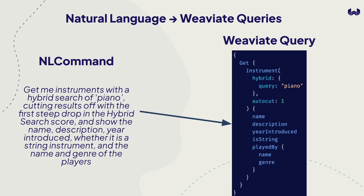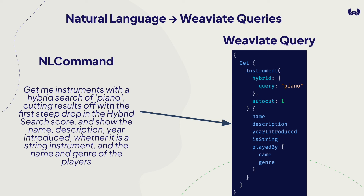Here's another example of a more complex query: 'Give me instruments with a hybrid search of piano, cutting results off with the first deep drop in the hybrid search score, and show the name, description, year introduced, whether it is a string instrument, and the name and genre of the players.' The gorilla is able to combine hybrid with autocut — which stops showing search results once they're no longer good according to the slope and vector distance — as well as do the cross-reference for the players of the instrument.